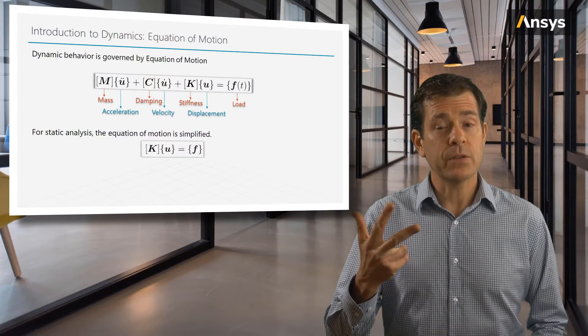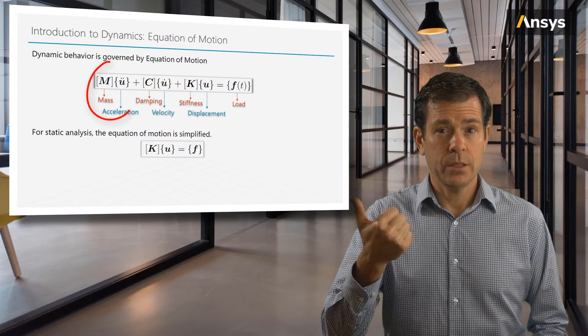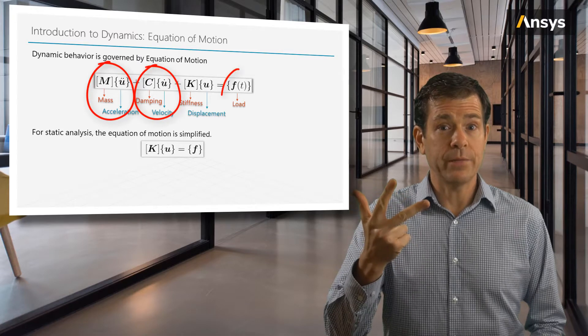So now let's see what's the difference mathematically between a dynamic and a static problem. What extra terms or factors do we need to consider for a dynamics problem? There are three main differences that we need to address: inertia, damping, and loads that vary with time.